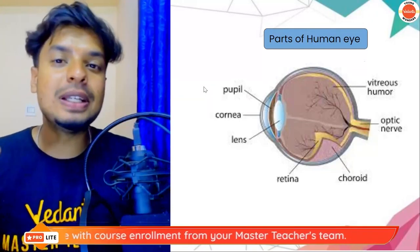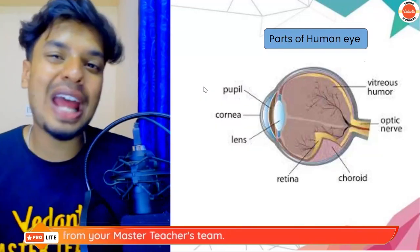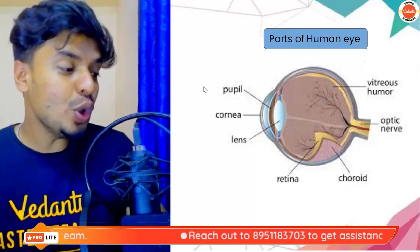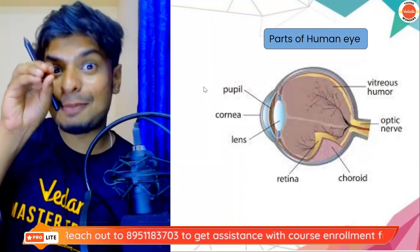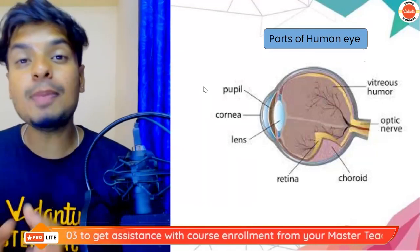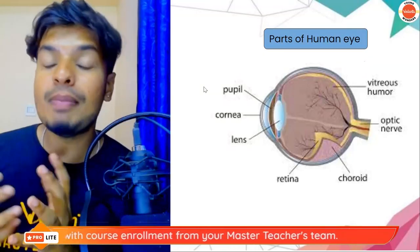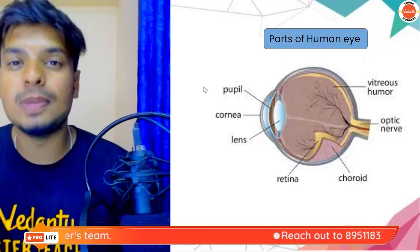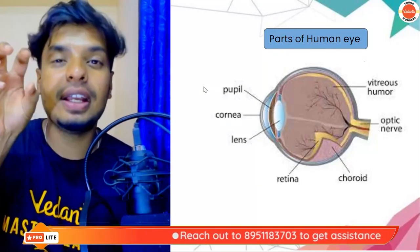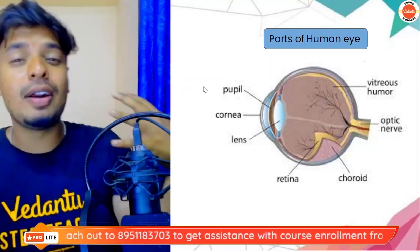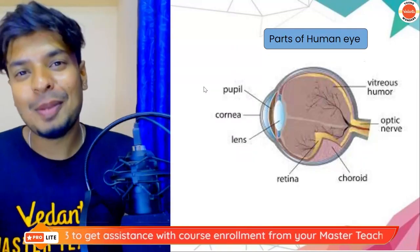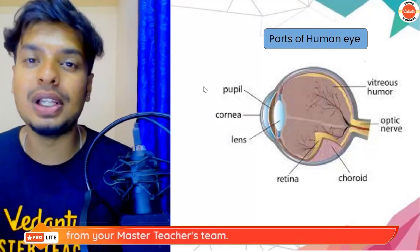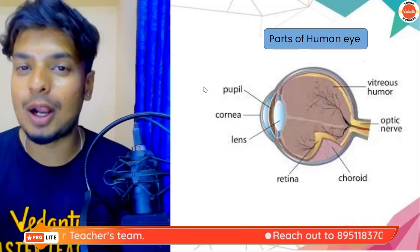The iris has a small hole in the middle called the pupil — that's where light enters the eye. Try this activity: take a torchlight and shine it on a friend's eyes. You'll see the pupil moving — it expands and contracts. In a dark room, the pupil expands to absorb more light. When it's very bright, the pupil becomes small. The iris controls this movement of the pupil, making it big or small depending on the light around us.